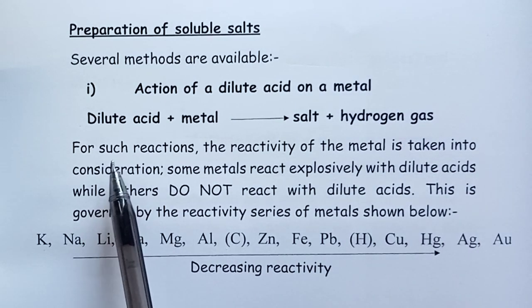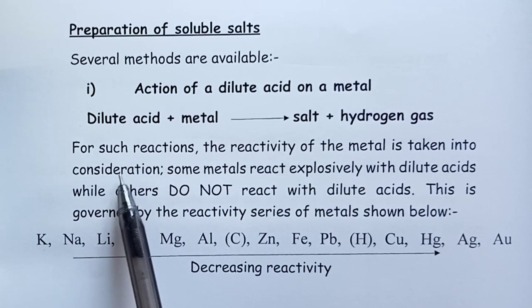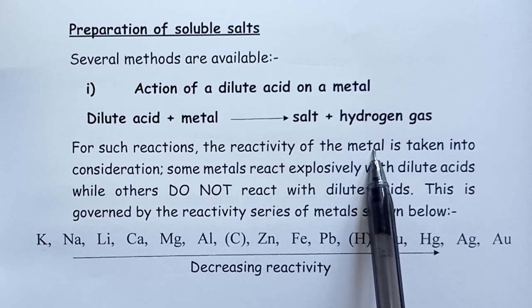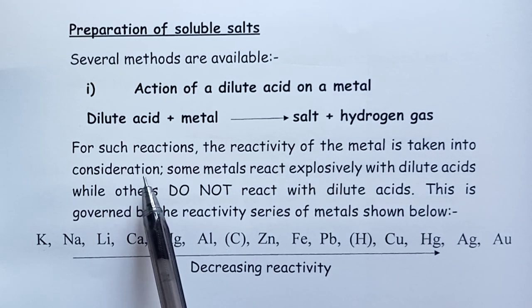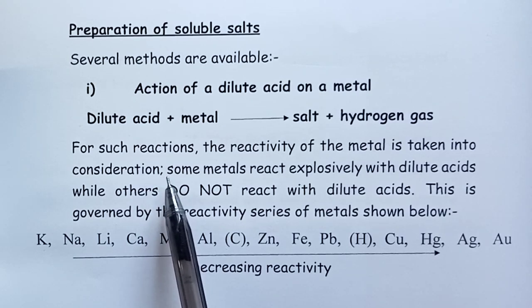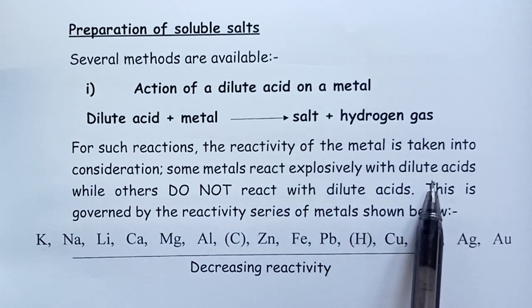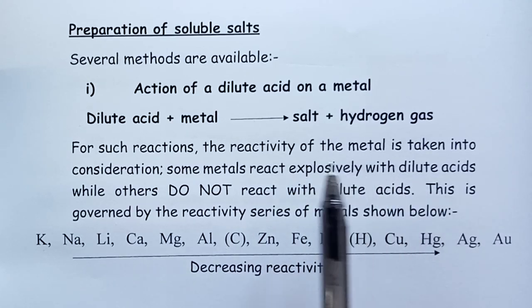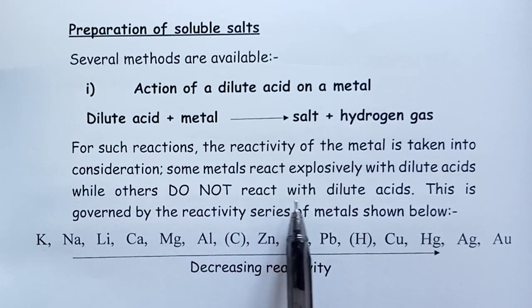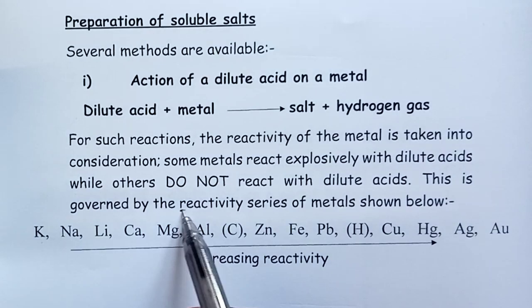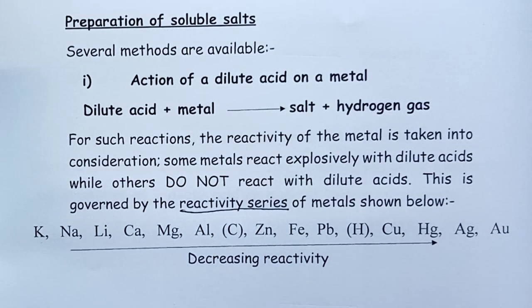However, before a student chooses this method, the reactivity of the metal must be taken into consideration. This is because some metals react explosively with dilute acids and should not be tried, while others do not react with dilute acids at all. This reactivity of metals is governed by the reactivity series, which was discussed in Form One.